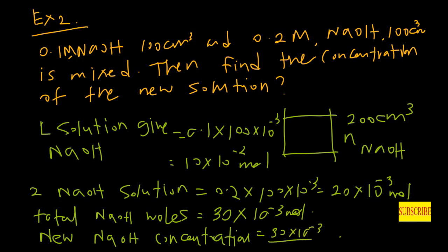We can cancel out the 10⁻³ terms, so the new concentration equals 30 divided by 200. The unit of this concentration is moles per cubic decimeter.